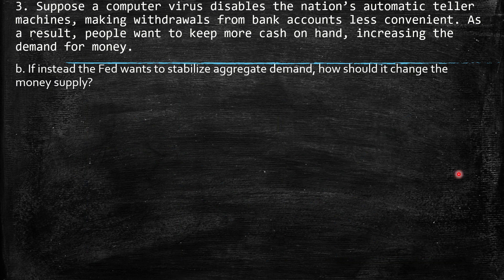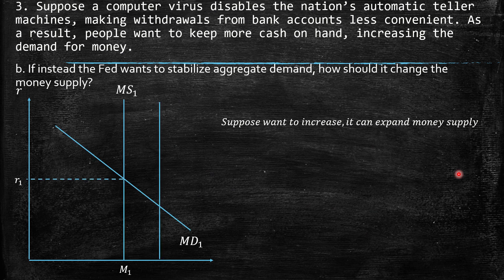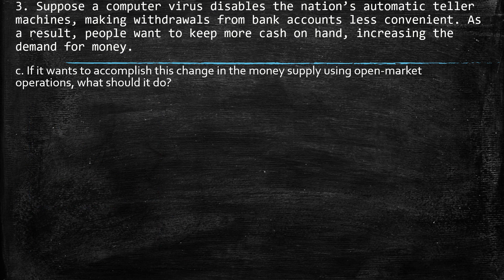b. If the Fed wants to stabilize aggregate demand, it can expand the money supply. When you expand the money supply, we have a lower interest rate and then more incentives to invest. c. To accomplish this using open market operations, the Fed can buy government bonds, injecting money into the economy so that owners of these bonds will have liquidity.